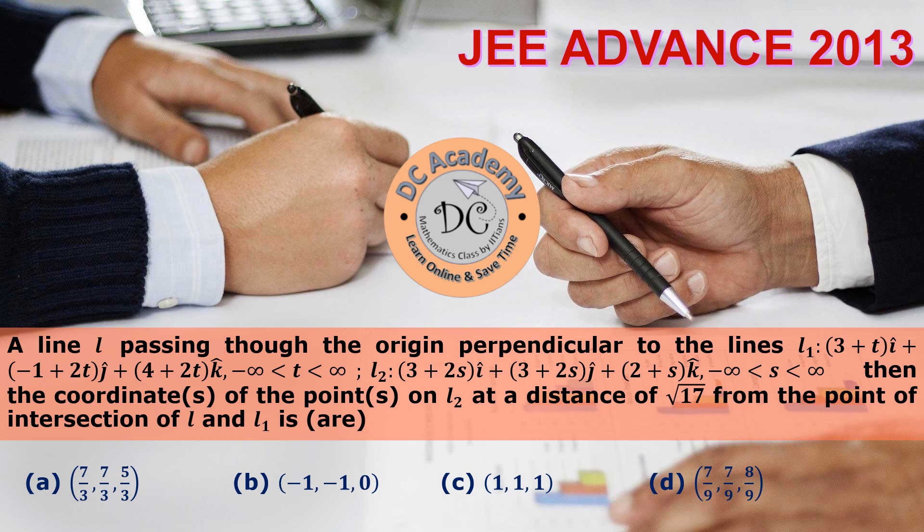Basically, we have to first find the equation of line L, then find the point of intersection of L and L1, and then find a point on L2 which is at a distance √17. That's the problem — let's go ahead and solve it.